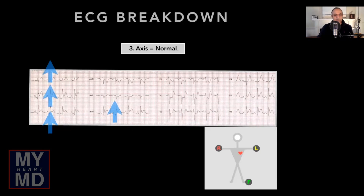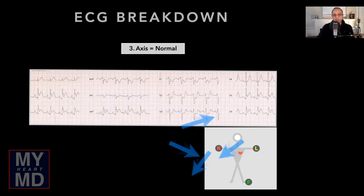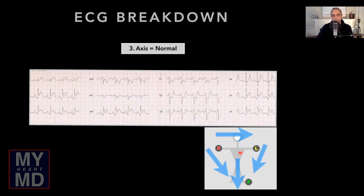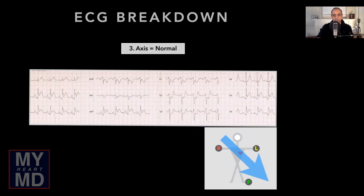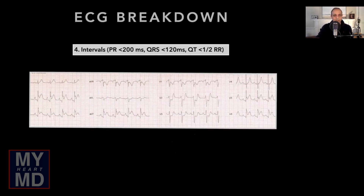The axis: limb leads I, II, and III are positive, aVR is down, and aVF is up. That goes along with the axis pointing toward the bottom-left corner, about the 5 o'clock position, making this a normal axis.